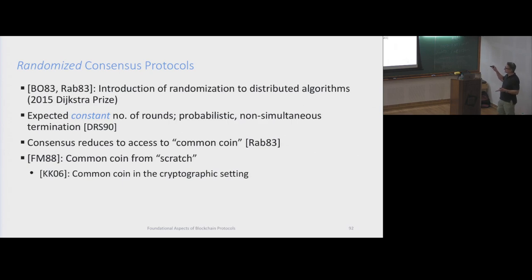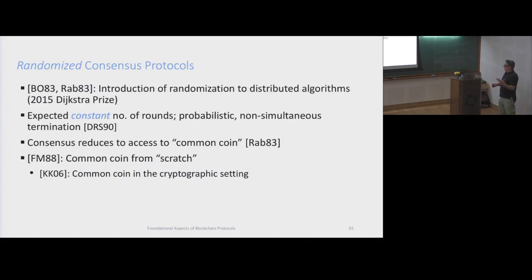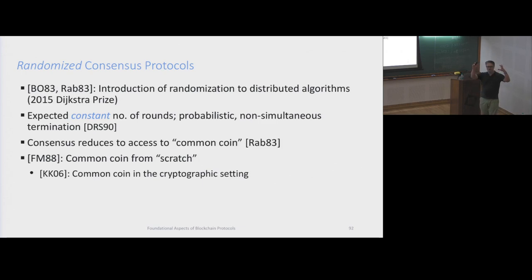This is a deterministic protocol. An important development was the introduction of randomized protocols, in which instead of having a linear number of rounds, you can achieve consensus in an expected constant number of rounds. That goes back to Rabin in 83, who showed how consensus in some sense reduces to having a common coin - something that each round publishes a random bit.